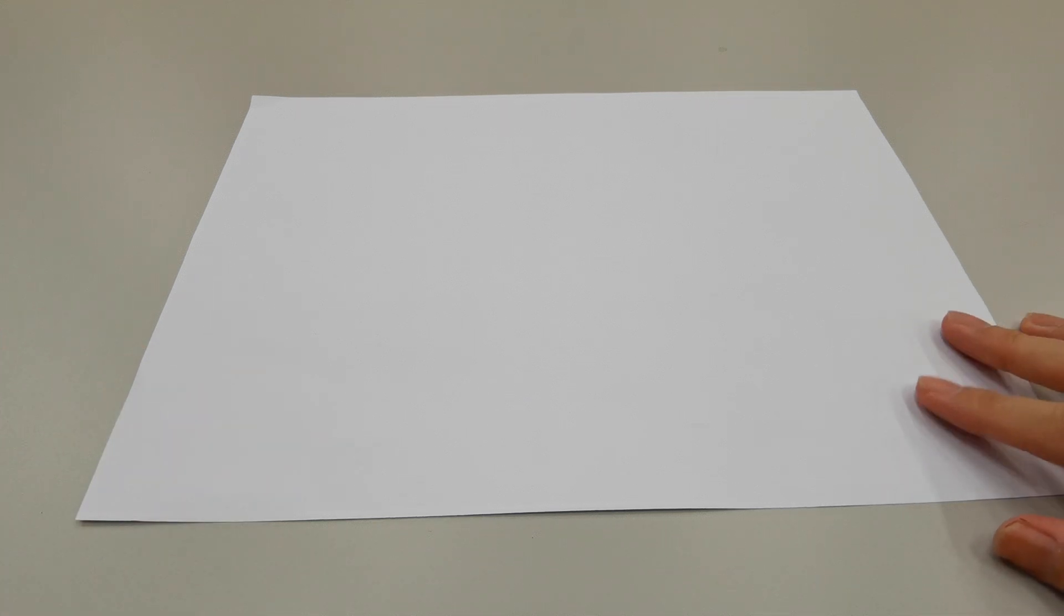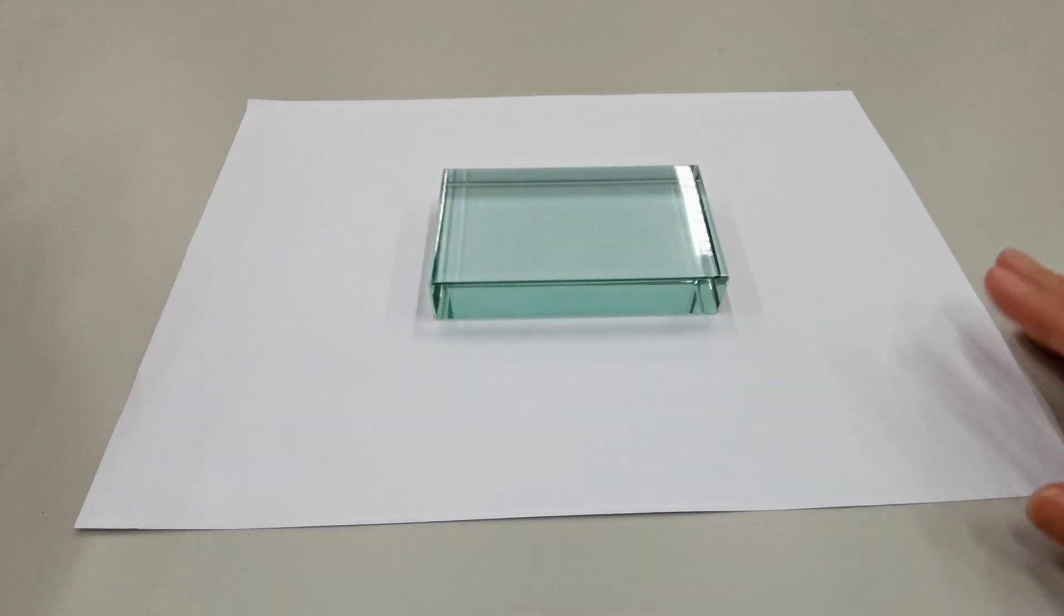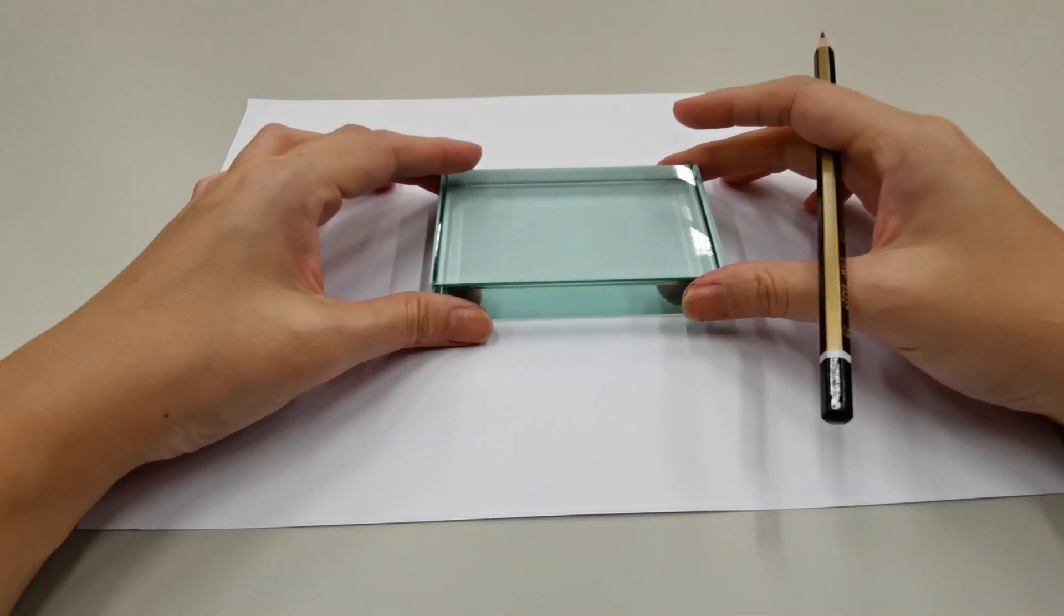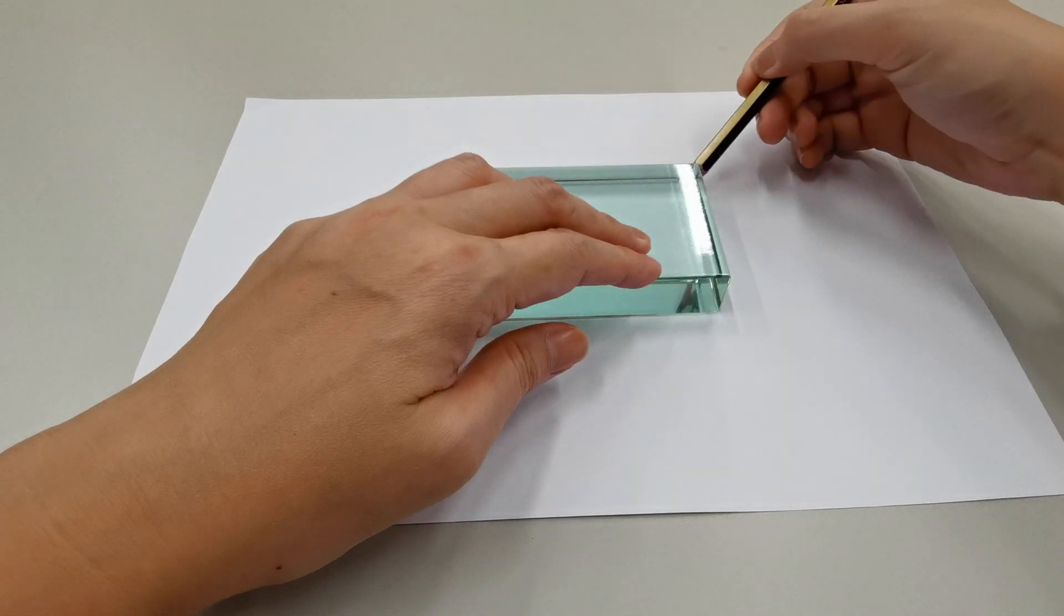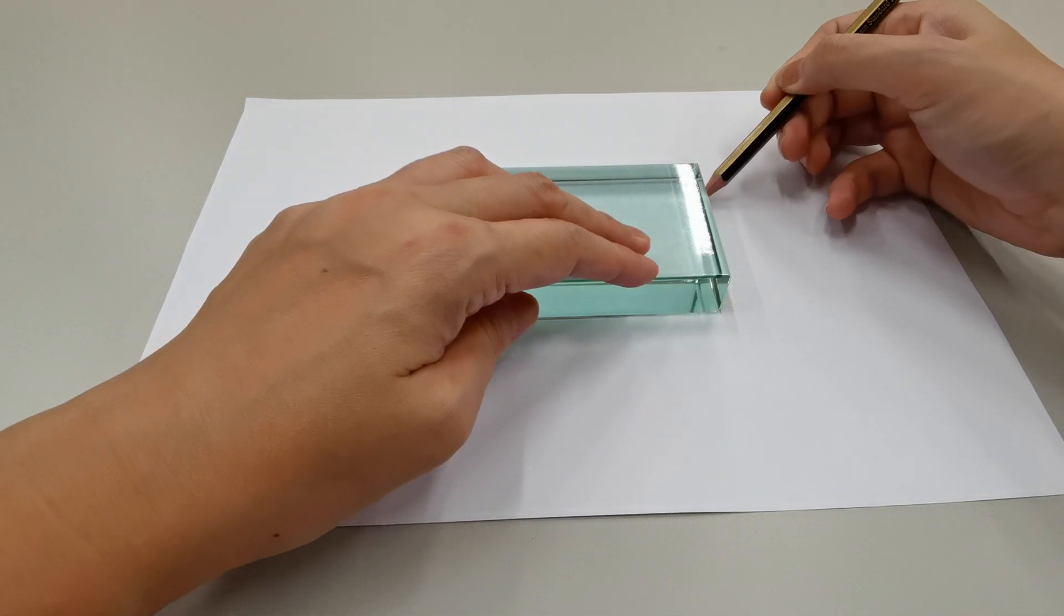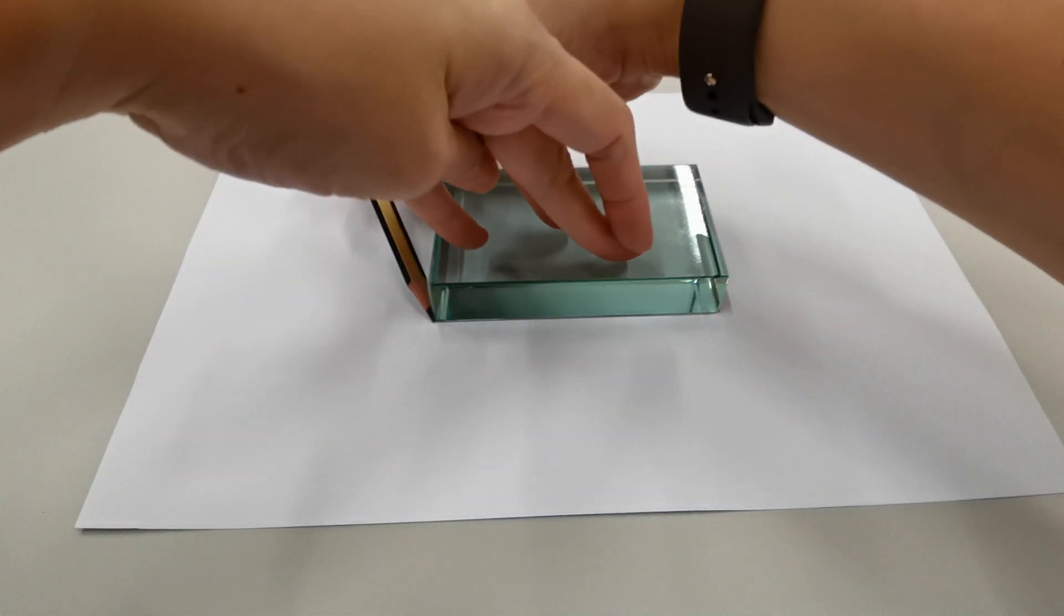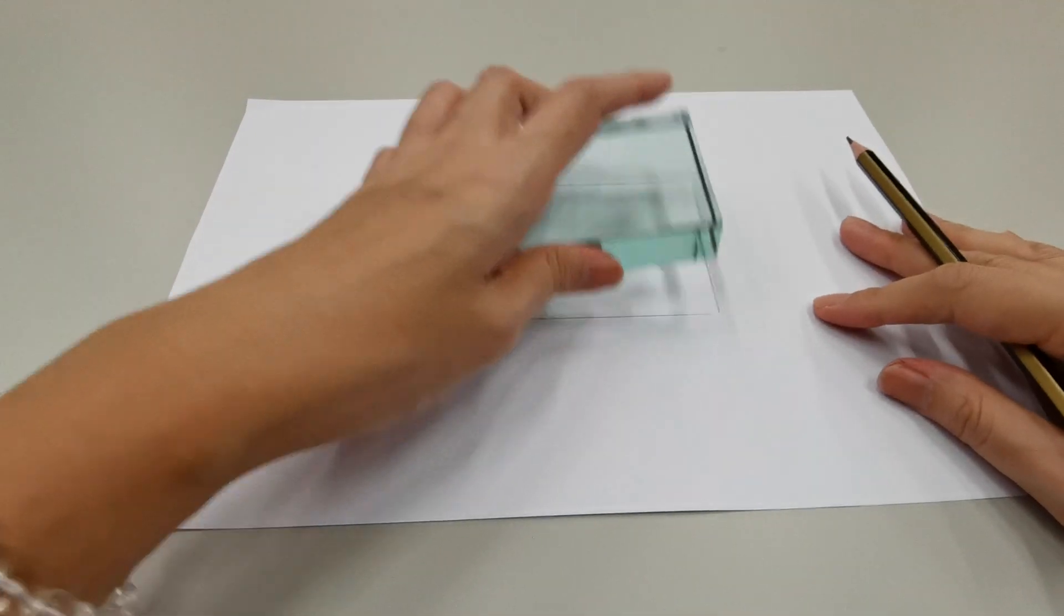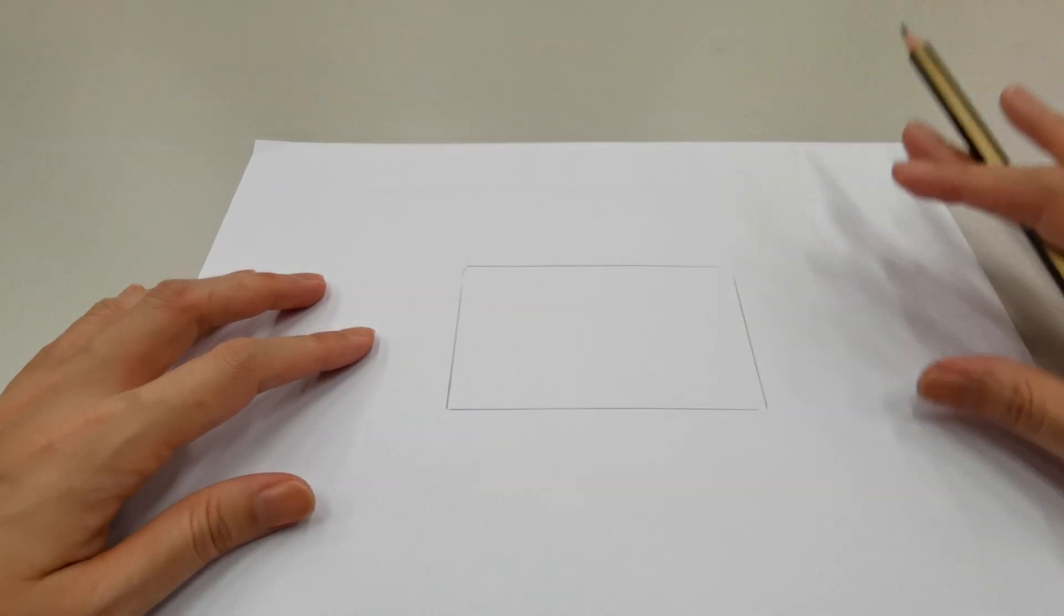On the blank piece of paper, first of all, we're going to trace the outline of the glass block. Place the glass block in the middle of the A4 paper. Using the pencil, we're going to trace the outline of the glass block around the edges. Next, remove the glass block and you can see we have the outline traced out.